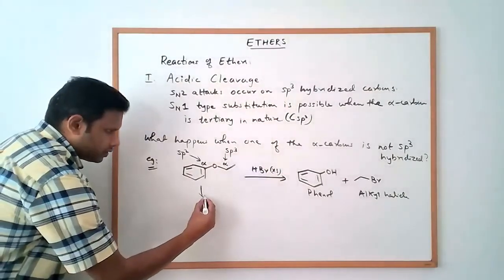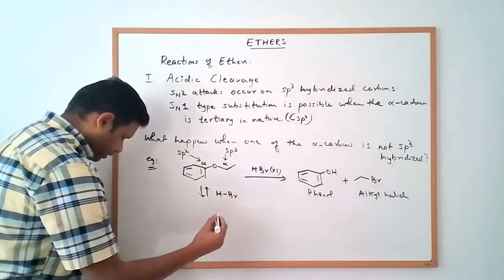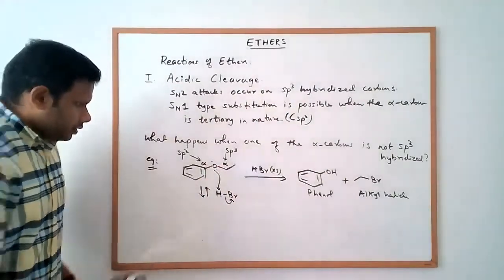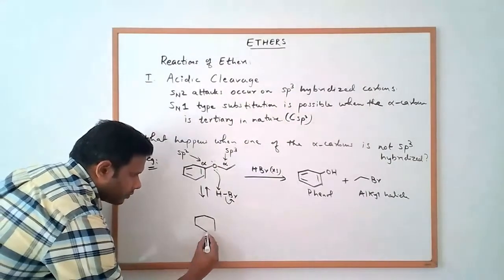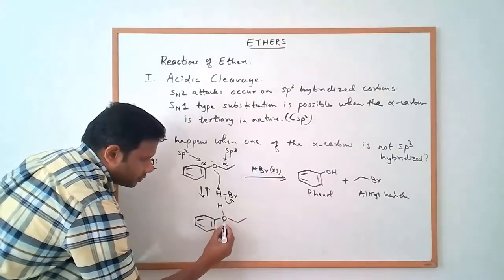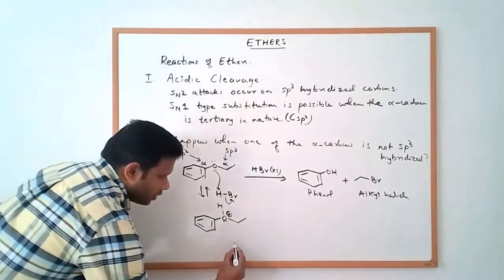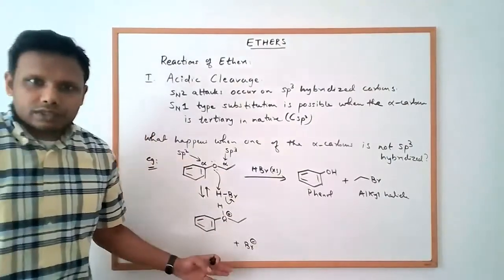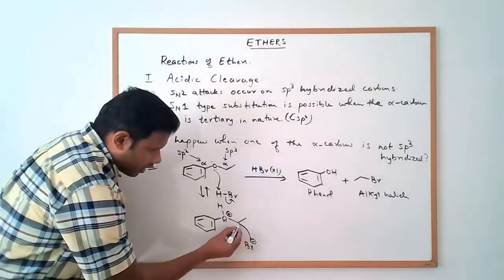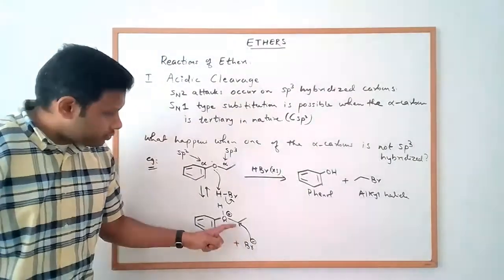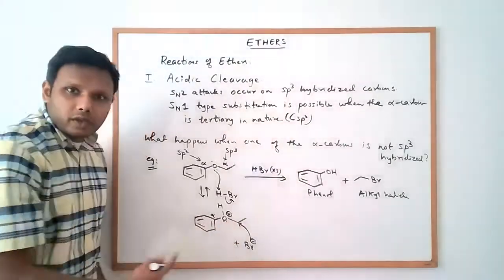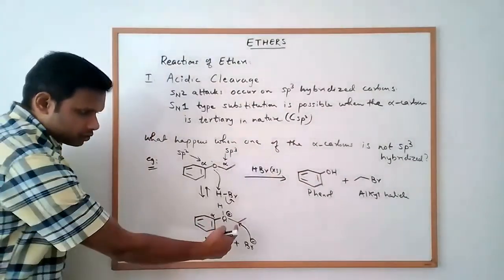The first step of the mechanism is an acid-base reaction where this ether gets protonated. We get the protonated ether with the hydrogen on the oxygen — oxygen is positively charged — plus we've made bromide. Now the bromide can go and attack the alpha carbon. It will only attack the sp3 alpha carbon; it will not attack the sp2 alpha carbon here because that carbon is not sp3 hybridized and would not undergo an SN1 or SN2 type reaction.